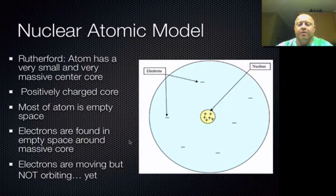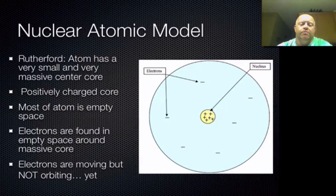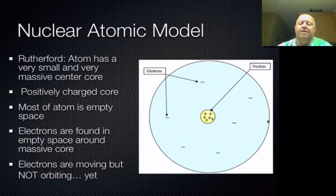From this experiment, yet another model of the atom was developed. Every discovery, every experiment, built our knowledge of what the atom looks like. Rutherford tells us the atom has a very small, massive, positively charged center core; most of the atom is empty space; and in that empty space are the electrons. In the nuclear model, he has yet to address how the electrons are moving — they know they're out there, but not orbiting yet. Really, all we've done is taken the idea of an evenly spread-out mass, condensed all the mass to the center core, and placed the electrons in an empty void around this massive core.